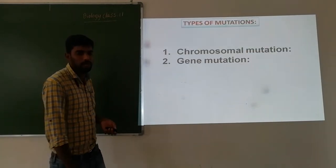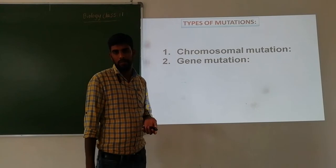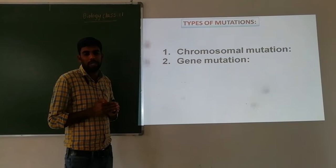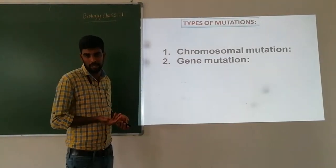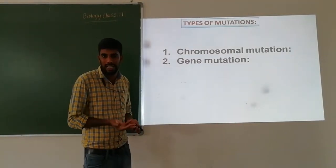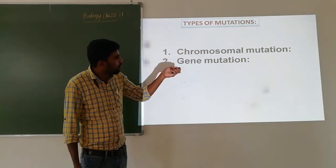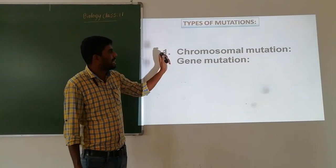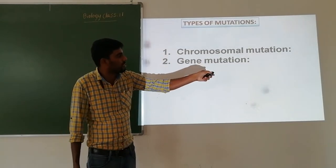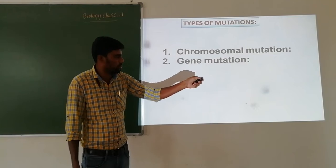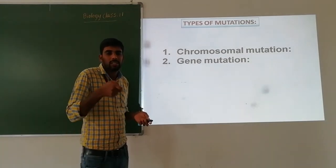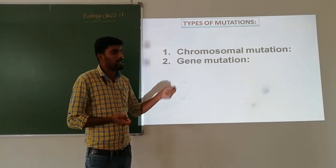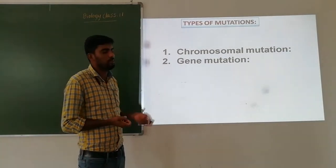Let's come to types of mutation. Types of mutation are broadly classified into two types based on their location. First is chromosomal mutation — changes occurring in chromosomal structure. Second is gene mutation — changes occurring in the DNA sequence of an individual gene.